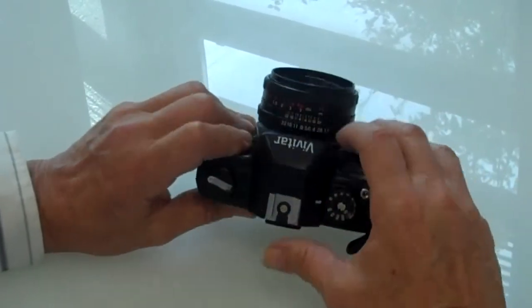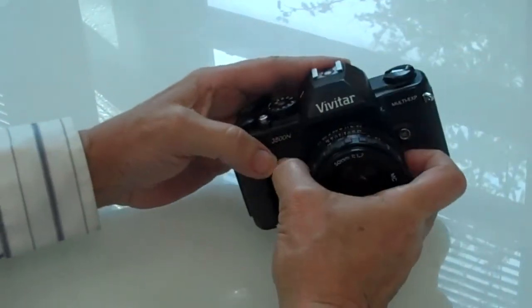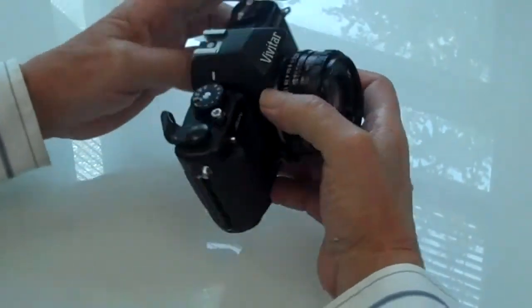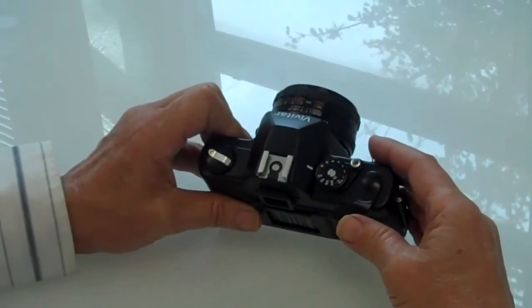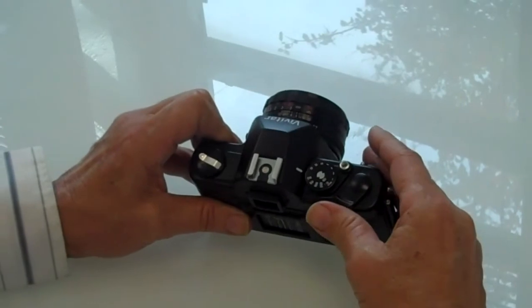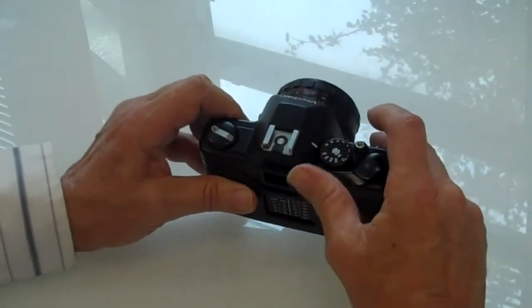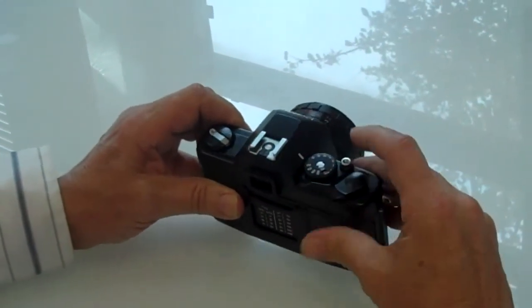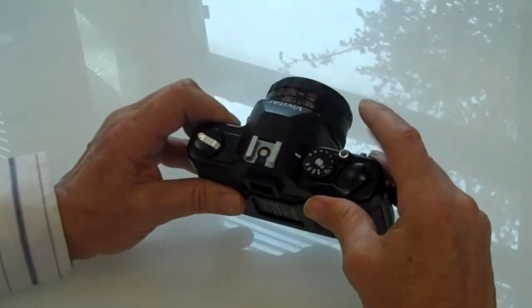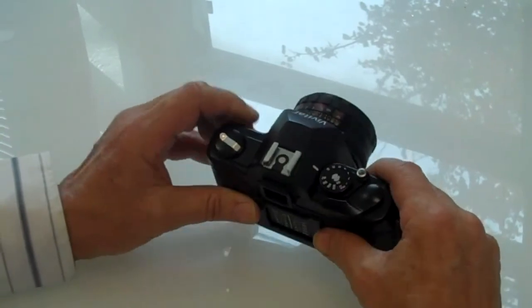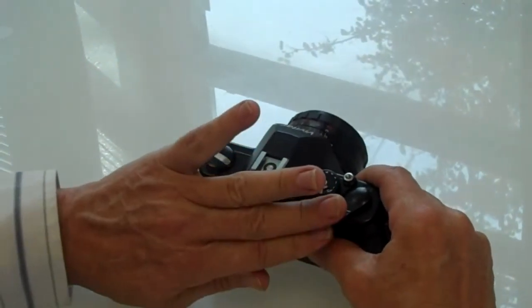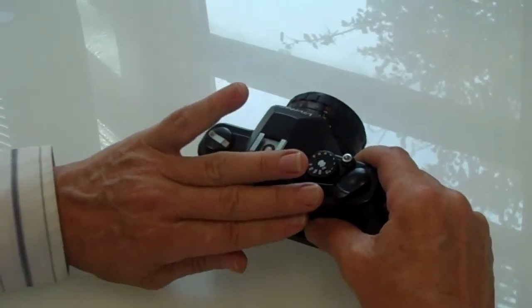Now, with some cameras, for instance this Vivitar camera, some cameras when this film advance lever is depressed towards the camera, it locks. In other words, you can't shoot when this is locked towards that. That way, if you have a strap or something or it hits that, you will not accidentally take a photograph.